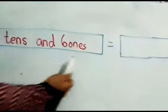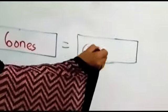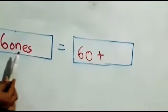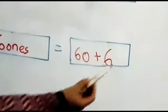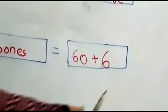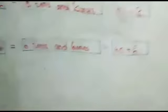6 tens is 60 plus 6 ones is 6. So 60 plus 6 becomes 66.